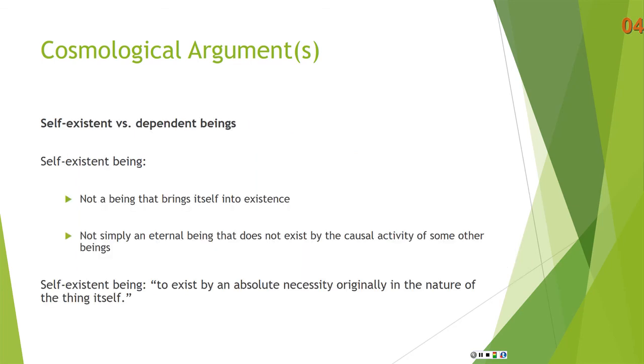So when it comes to cosmological arguments, we can distinguish between, in the wording of William Rowe, self-existent beings and dependent beings, or in the wording of Samuel Clark, more like it. So self-existent being is, a couple of things that it's not. It's not a being that brings itself into existence. That's nonsense. That nothing can bring itself into existence. That involves a contradiction. Because in order to bring yourself into existence, you have to exist prior to your existence. So prior to your existence, you both exist and you don't exist, which is a contradiction. And when I say prior, I don't necessarily mean temporally prior, maybe logically prior. So that's not what we're talking about when we mean self-existent being, when we refer to a self-existent being.